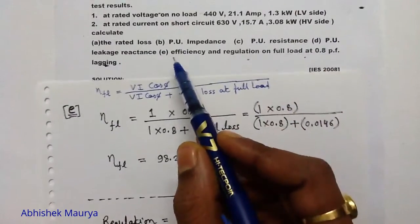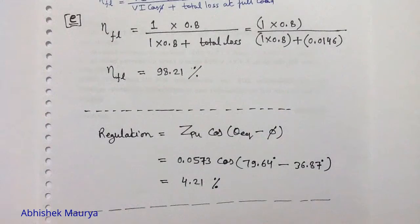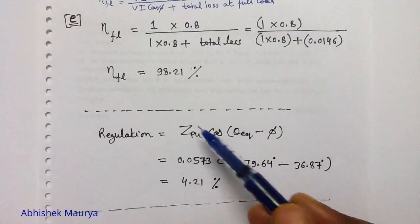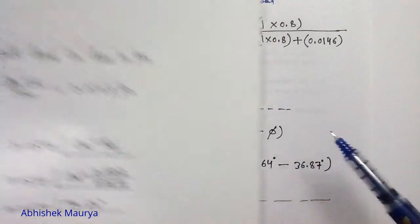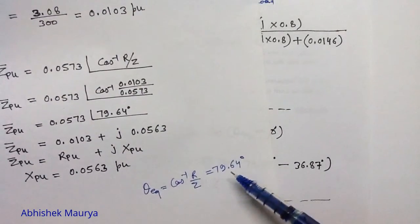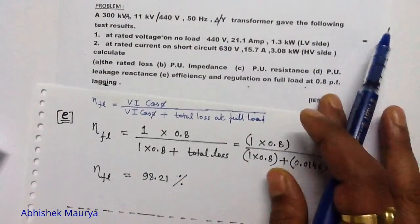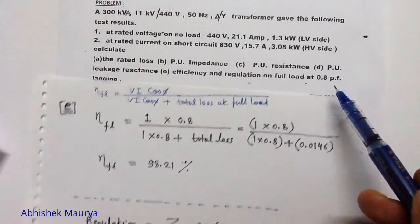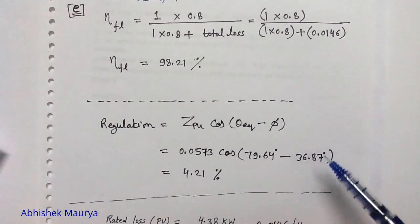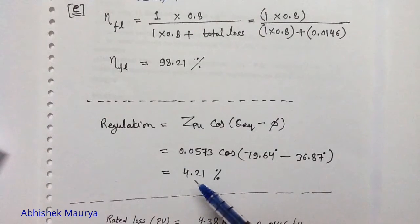Also in the fifth part, we calculate the regulation on full load at 0.8 power factor lagging. Using the formula Z per unit times cos(theta equivalent minus phi), with per unit impedance = 0.0573, theta equivalent = 79.64 degrees, and the power factor angle phi = cos inverse 0.8 = 36.87 degrees, we get regulation equals 4.21%.